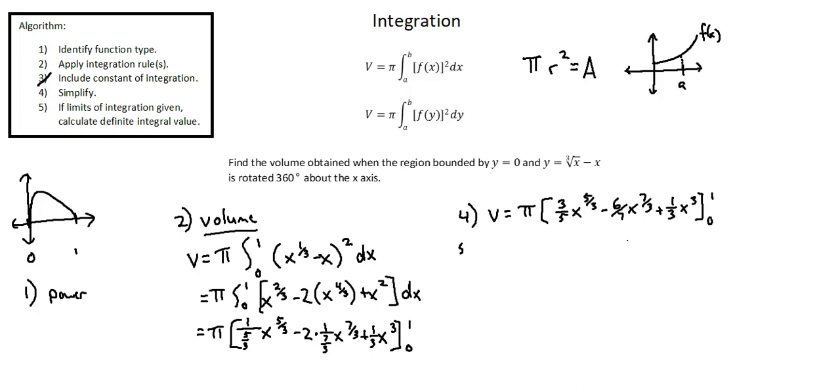And step five, if limits of integration given as they are in this example, calculate definite integral value. So our volume equals pi times. First I'll insert one into each term. Inputting one into the x spot. One to the power of five thirds is one. Times three fifths is three over five.